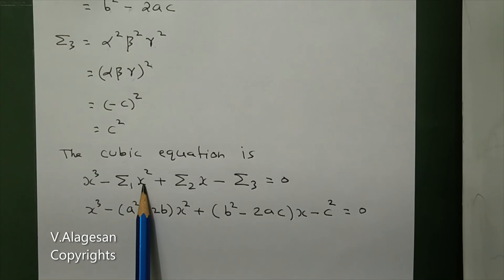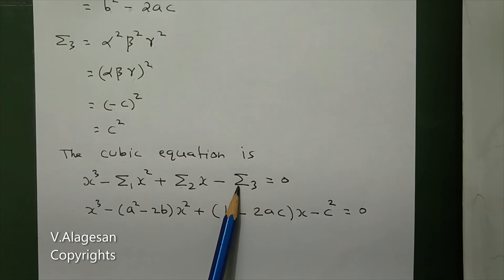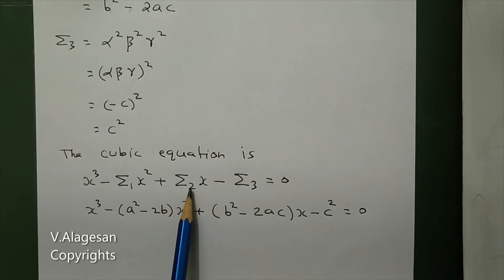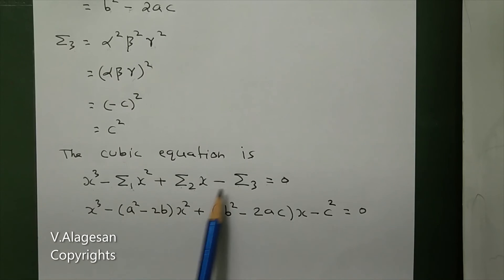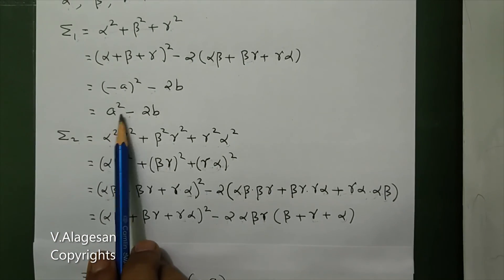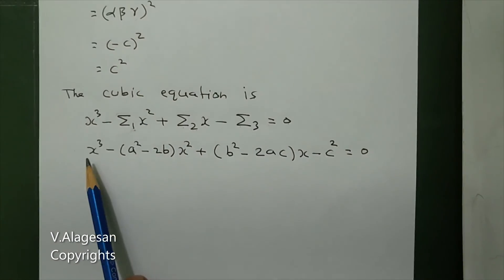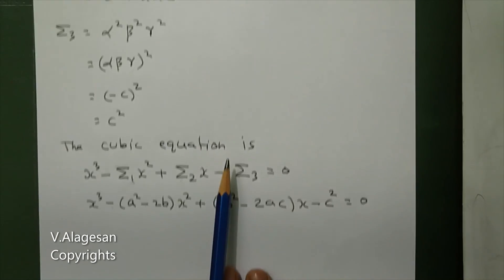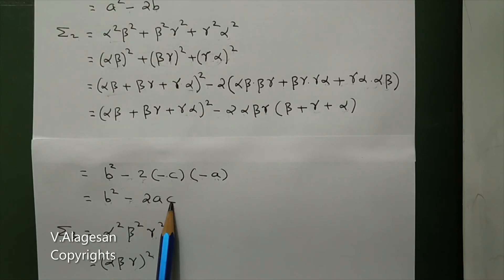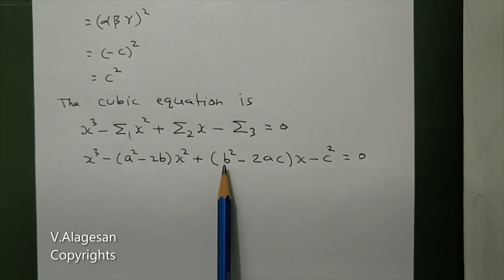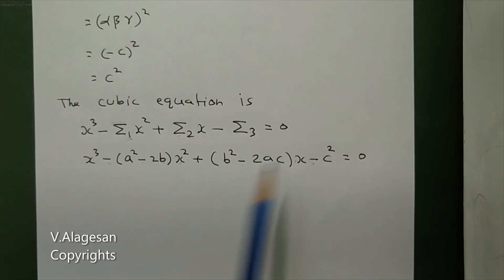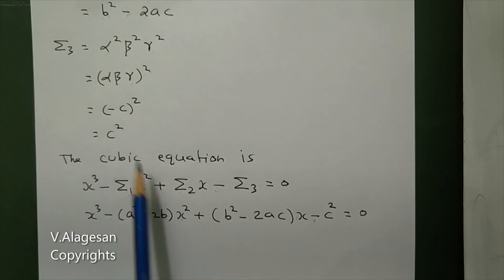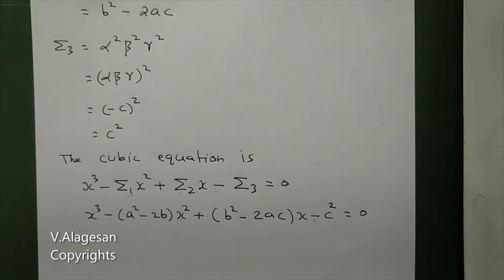So the cubic equation is x³ - Σ1·x² + Σ2·x - Σ3 = 0. Substituting: x³ - (a²-2b)·x² + (b²-2ac)·x - c² = 0. This is the required cubic equation.